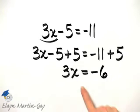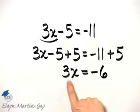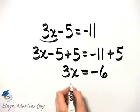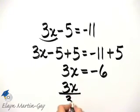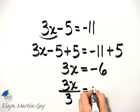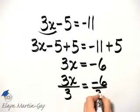Now how do I finish solving? I'll divide both sides of the equation by the coefficient of X. So in other words, I'll divide the left side by 3 and the right side by 3.